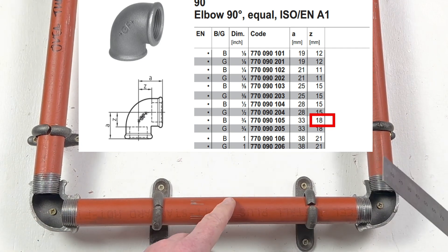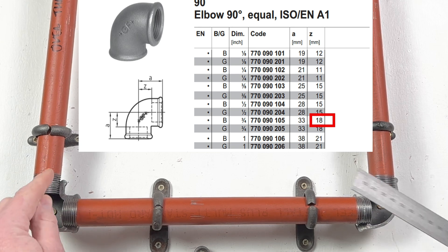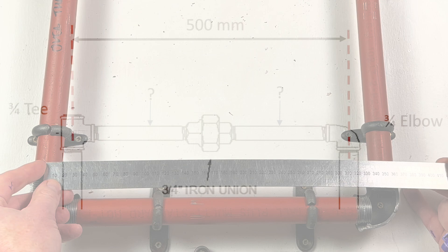So if we cut our pipe 314mm, we'll gain 18mm that way, 18mm that way. So our centre to centre will be 350mm.